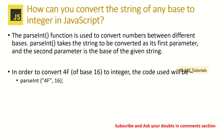How can you convert a string of any base to an integer in JavaScript? The question is essentially how do you convert a string into a number. We can do that using the parseInt() method, which converts the string into the different numeric bases you want to use.